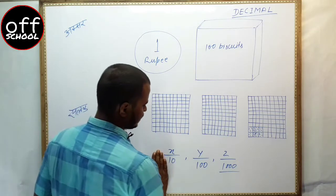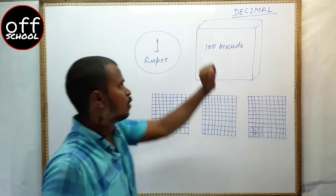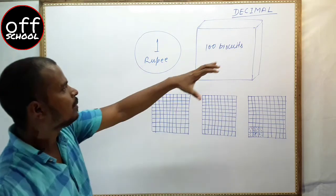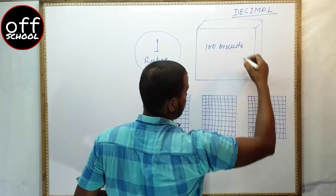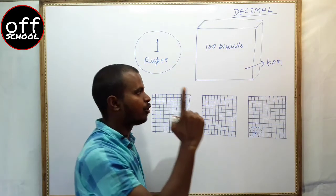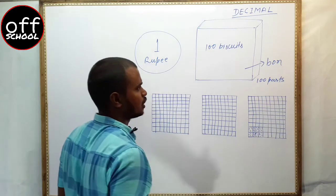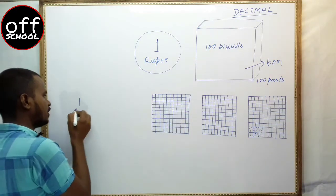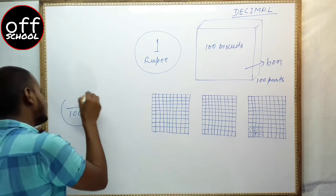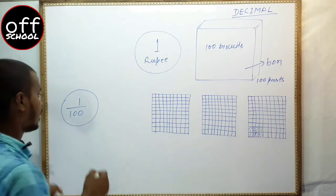To understand this, consider a simple concept. Imagine there is a box of biscuits. Inside the box there are packets, and inside each packet there are biscuits. Now, this is a single box. I want to divide this thing. The box is divided into 100 parts. So one part represents 1 by 100 of the box. This represents the 100th part of the box — that is, 1 by 100 of the box.